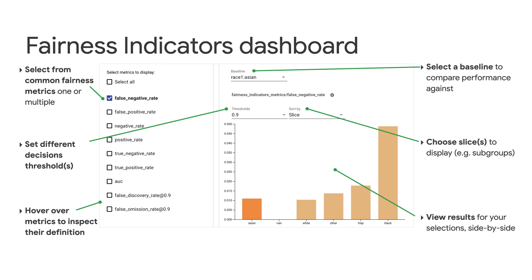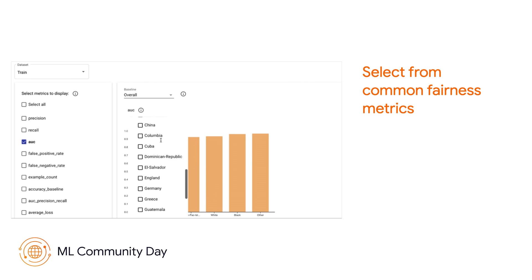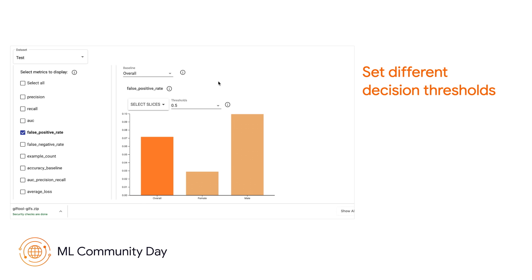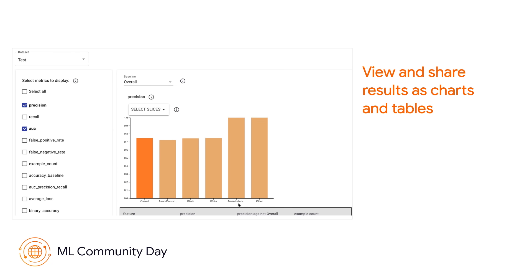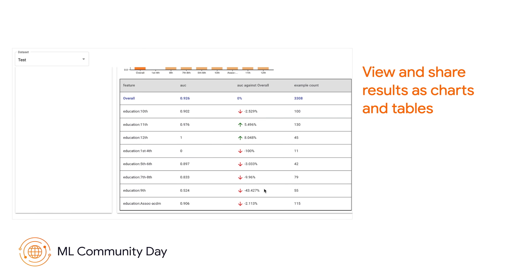Fairness Indicators can help you solve some of these challenges. First, it makes it easy to zero in on the performance of your model for specific subgroups or demographics. It also comes preloaded with some of the most common fairness metrics, which means you don't have to commit to a single definition up front. Second, Fairness Indicators provides an interactive UI and dashboard for exploring and sharing the results of your analyses with others. Here is a snapshot of the Fairness Indicators dashboard. Within the dashboard, you can select one or multiple fairness metrics, select which slices or subgroups you want to review, set different decision thresholds, and review and share output as charts and tables. Lastly, Fairness Indicators is scalable and flexible. It can be run as part of TFX's evaluator component, as a TensorBoard plugin, or as standalone binaries. It also supports both TensorFlow and non-TensorFlow models.